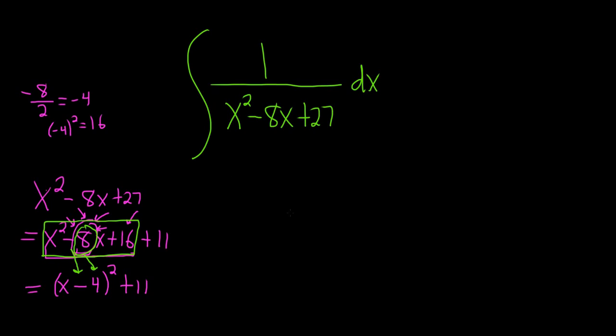All right. So let's see what this becomes. This is 1 over, I'm going to write it like this: x minus 4 squared. And if you remember, there's a formula for this. This is going to be an arctangent. So you want to write the 11 as a number squared. So what you do is you write it as the square root of 11 squared dx.